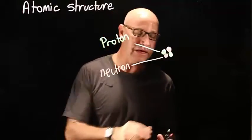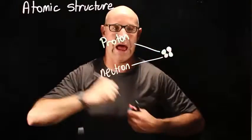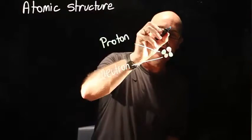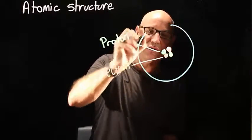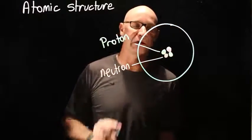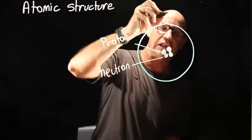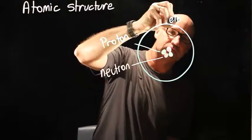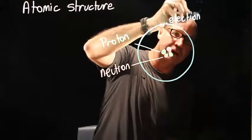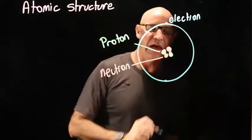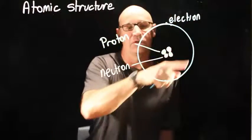Now, to complete our atom, we have a third type of subatomic particle called an electron that orbits around the outside of the nucleus.